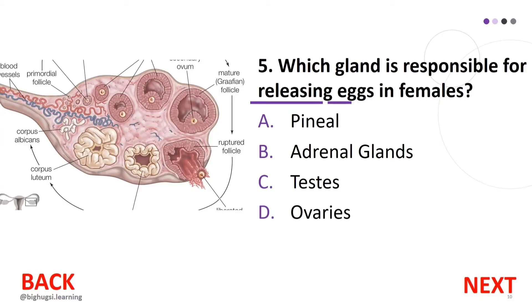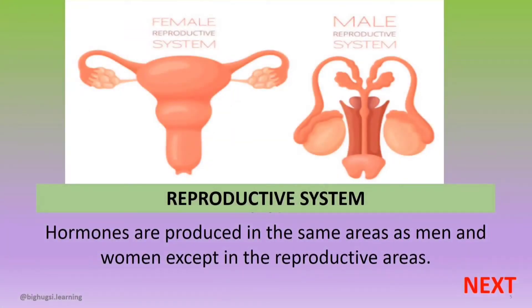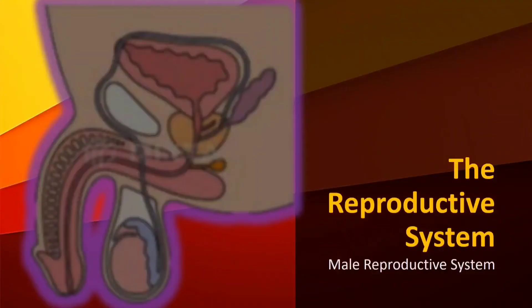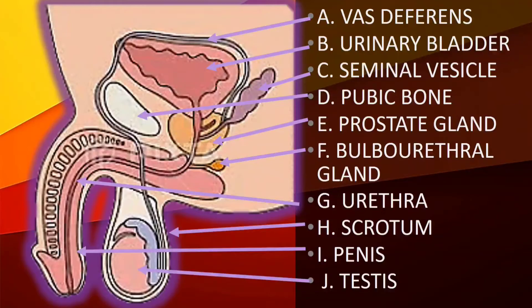Number 5: Which gland is responsible for releasing eggs in females? A. Pineal gland, B. Adrenal glands, C. Testis, D. Ovaries. The correct answer is D, Ovaries. These are the parts of the male reproductive system.